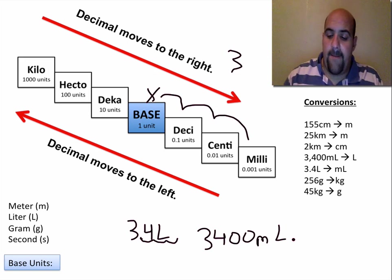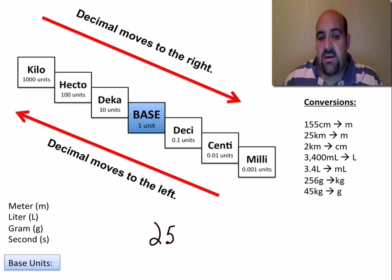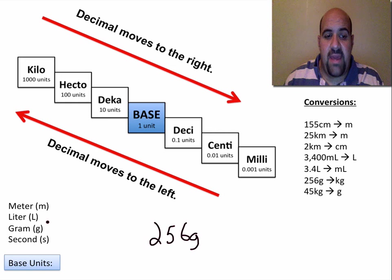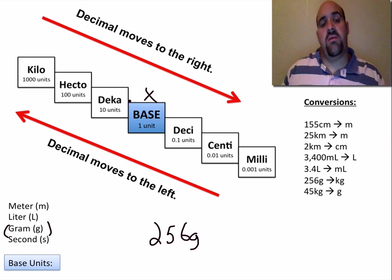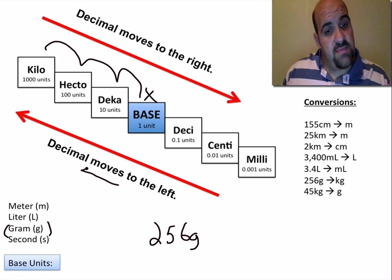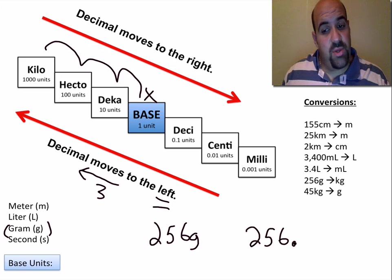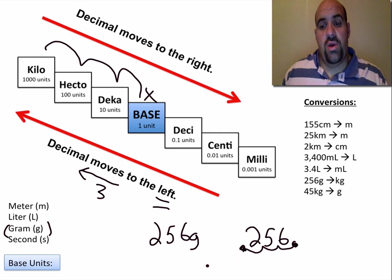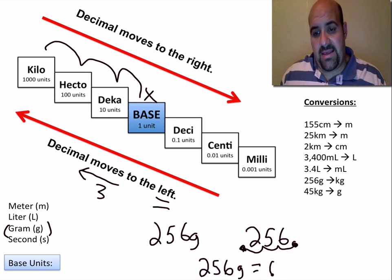Let's say we have 256 grams. Gram is a base unit right here, and we're going into kilograms — kilo is up here. We go up one, two, three steps, so the decimal moves to the left three places. The number 256 has an assumed decimal here; it goes over one, two, three places. So 256 grams equals 0.256 kilograms.